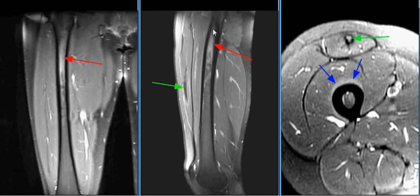Associated marrow edema is seen in the proximal shaft of the femur, as seen on this image with the red arrow. No discrete fracture is identified.